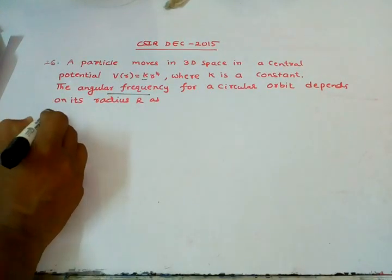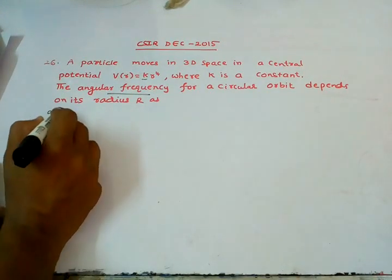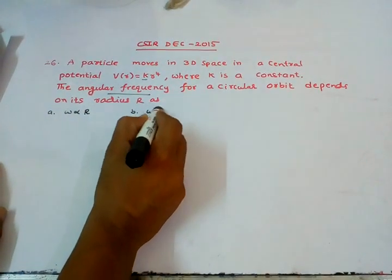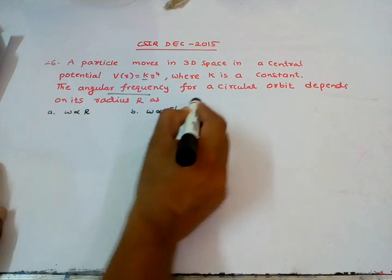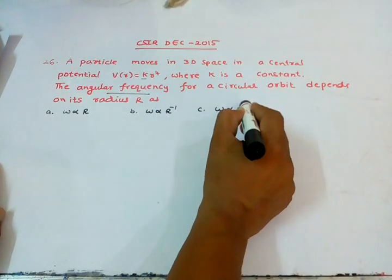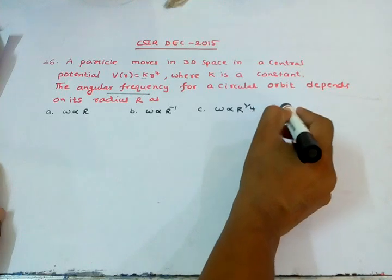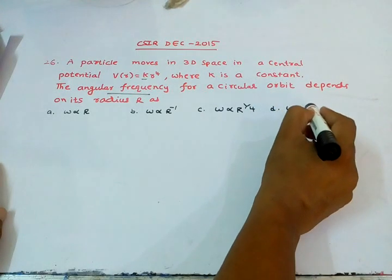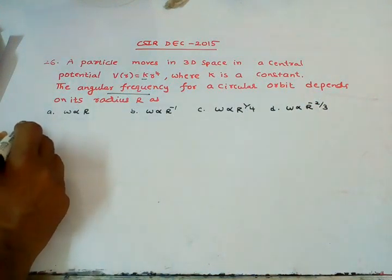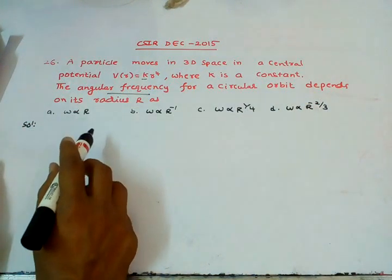Here the solutions we have: Omega is proportional to R, Omega is proportional to R inverse, Omega is proportional to R¼, Omega is proportional to R^(-2/3).